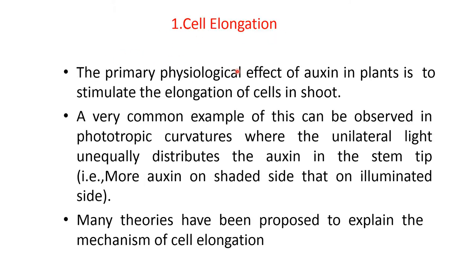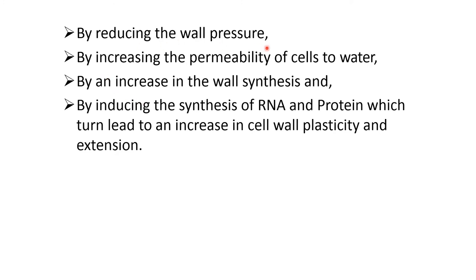Cell elongation: the primary physiological effect of auxin in plants is to stimulate elongation of cells in the shoot. A very common example is seen in phototropic curvature, where unilateral light unequally distributes auxin in the stem tip — more auxin on the shaded side than on the illuminated side. Theories explaining cell elongation include reducing wall pressure, increasing permeability of cells to water, increasing wall synthesis, and inducing RNA and protein synthesis, leading to increased cell wall plasticity and extension.